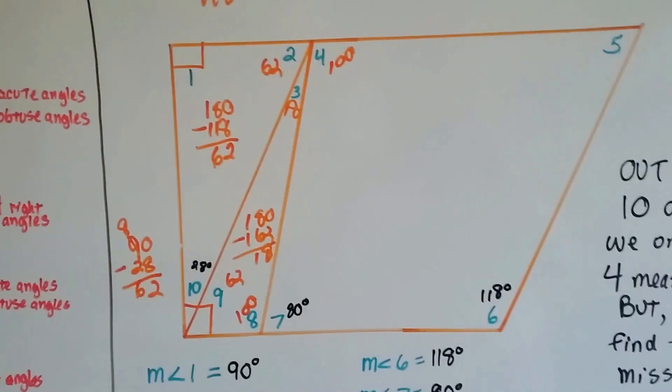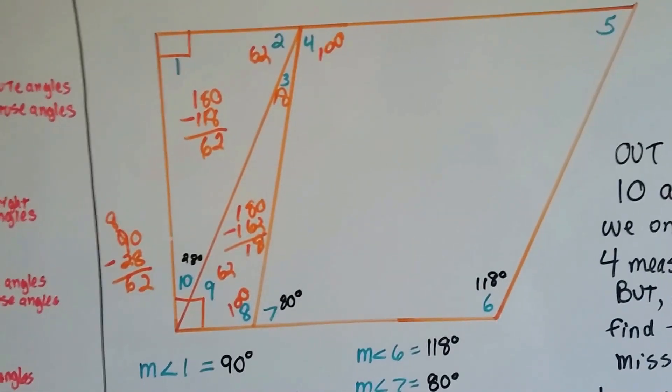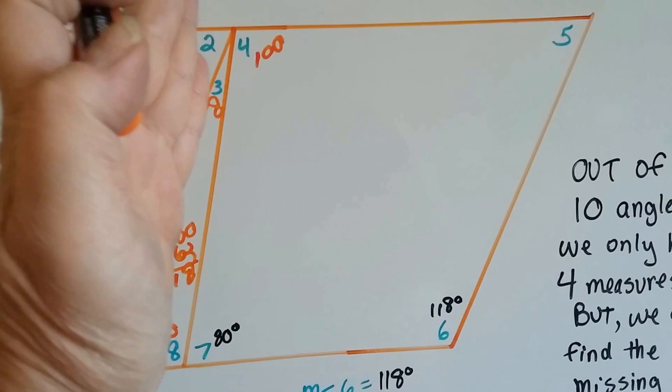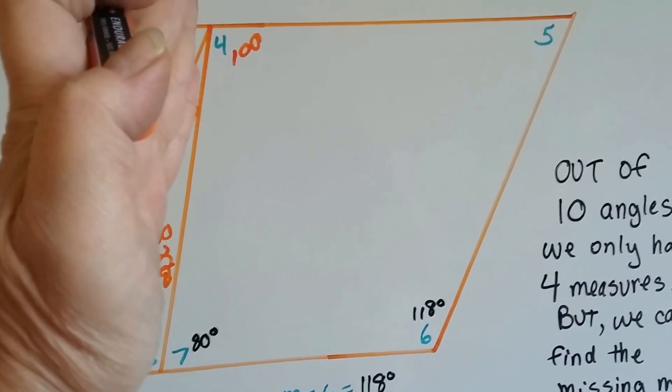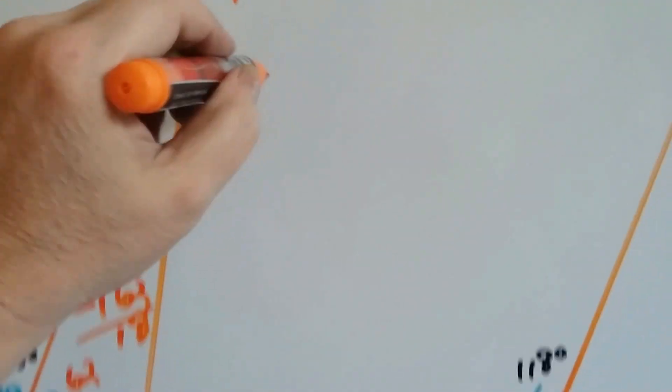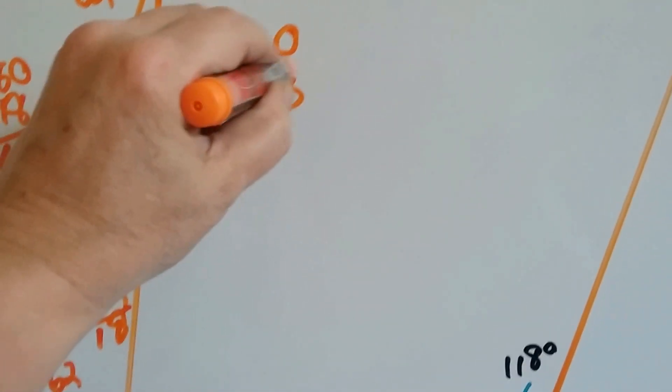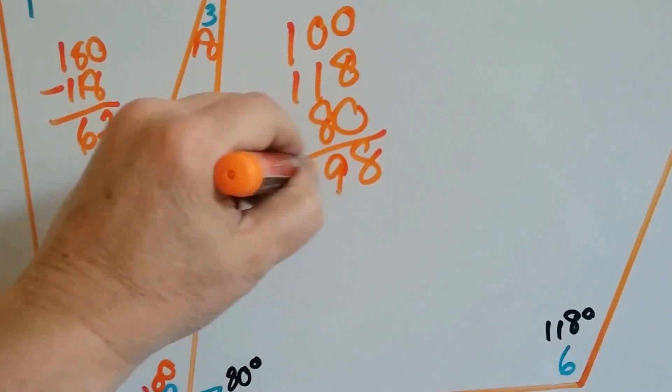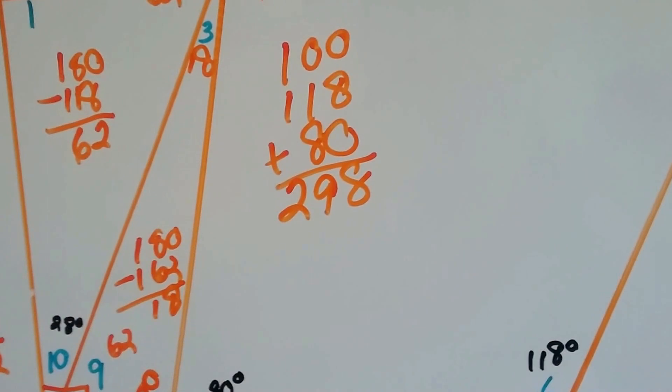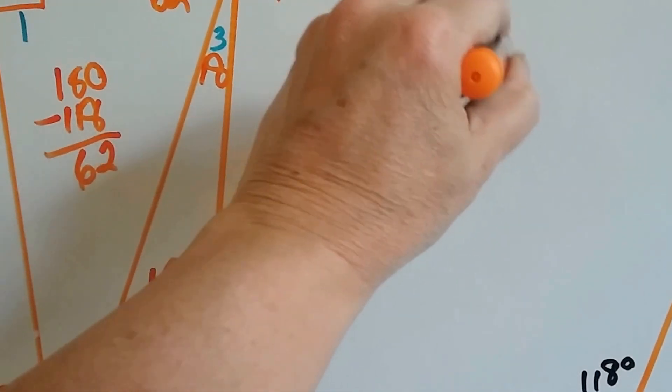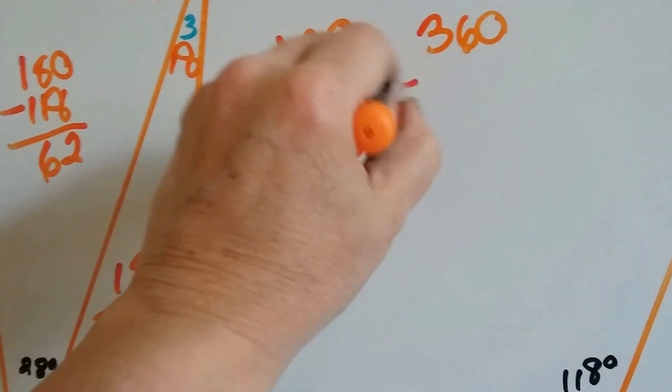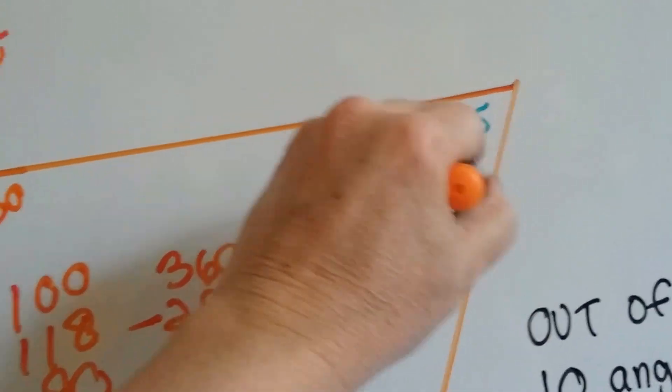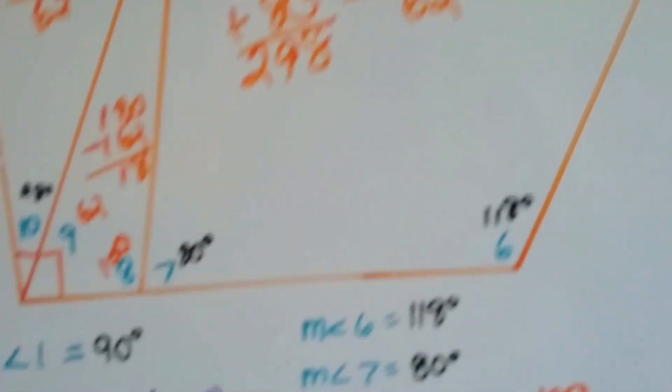The only angle measure we don't have now is number 5. And we've got number 4, number 7, and number 6, so for this quadrilateral to be 360 degrees, we can find it. We just add the 100, the 118, and the 80, and we have 298. Quadrilaterals of 360 degrees minus 298, that's 62 degrees. So the measure of angle 5 is 62 degrees.